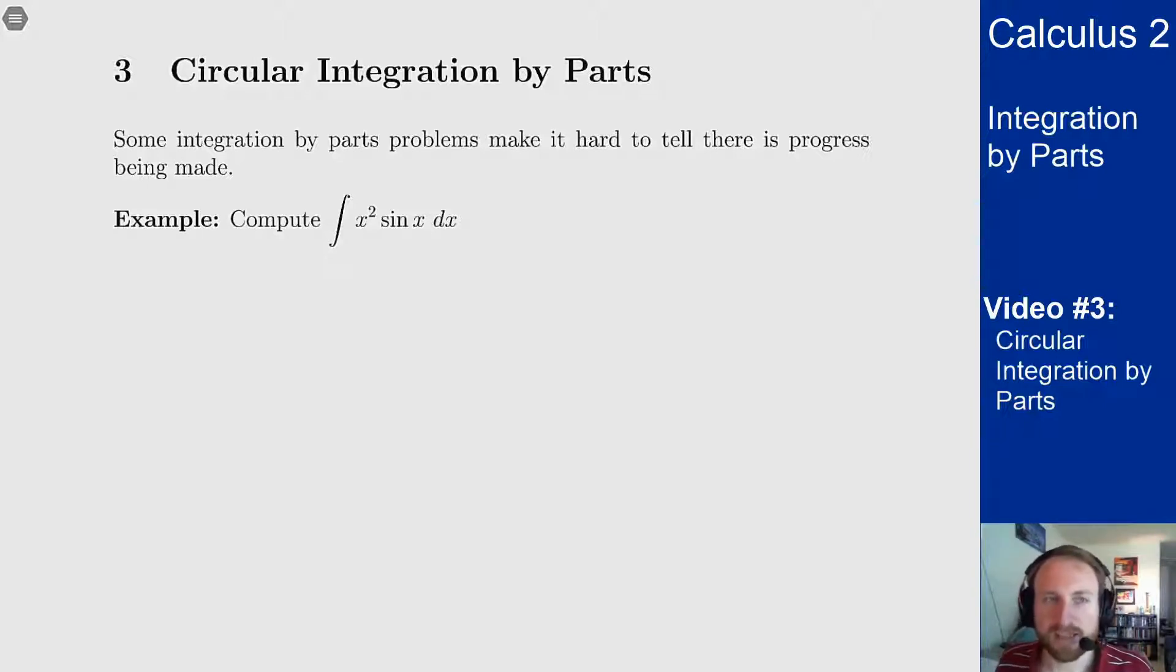For some problems it's hard to see that you're making progress towards the solution when doing integration by parts. For the last example we had here, the point was when I differentiated the x squared it went down to an x and eventually one more time will make it go away. Well what happens if you make the wrong choice for u and v?